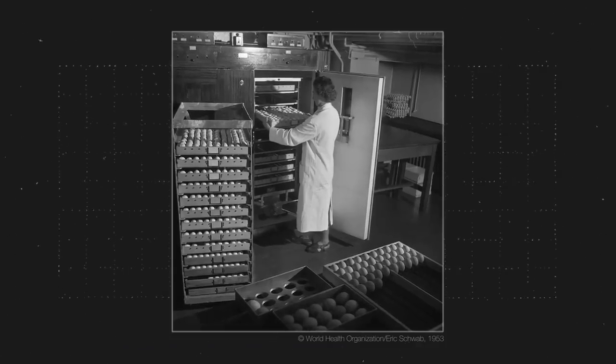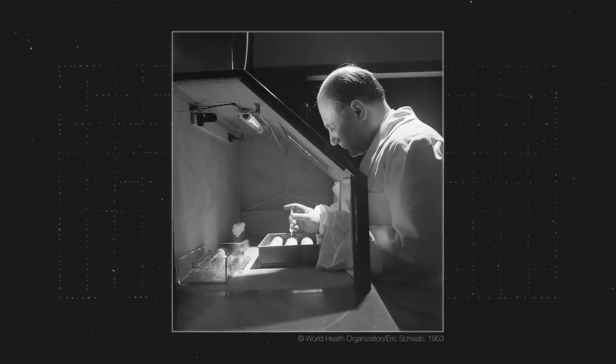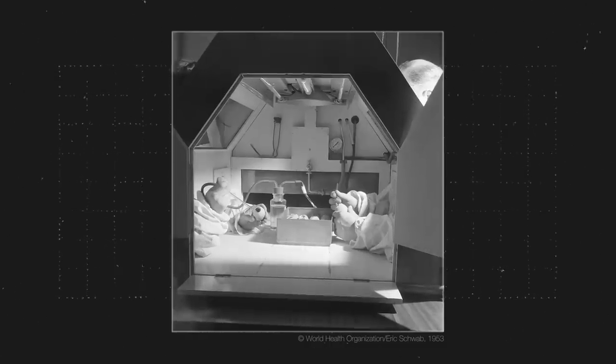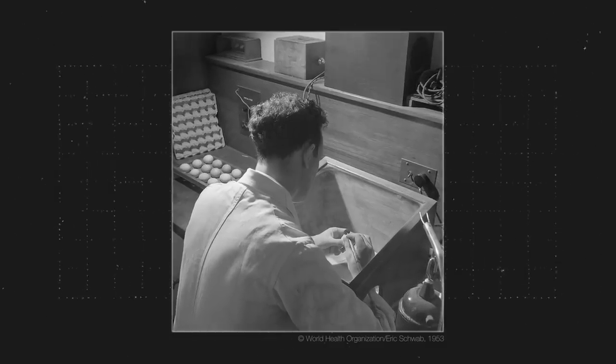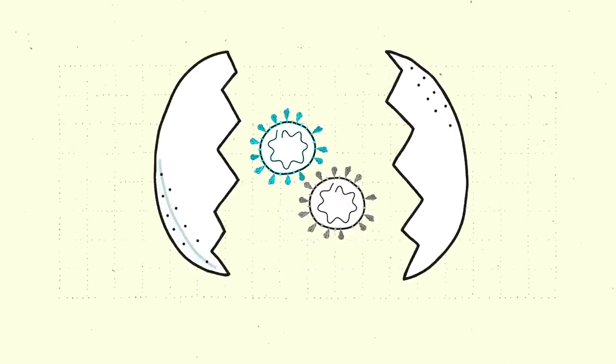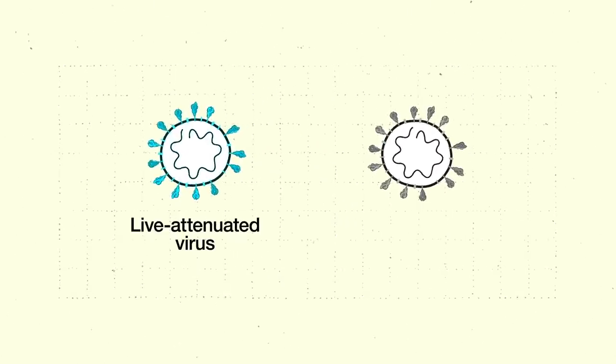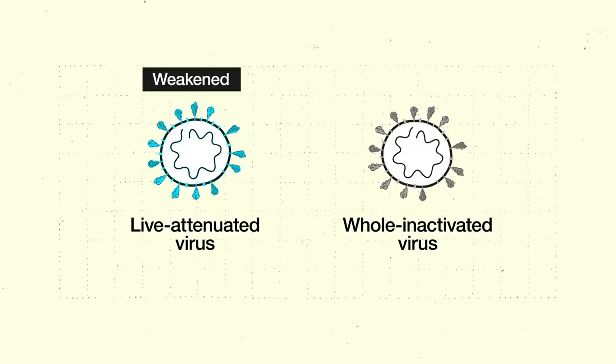In these pictures from 1953, the scientists are developing an influenza vaccine. They're injecting viruses into fertilized eggs, which are then incubated to allow the virus to replicate. Growing the virus is necessary for developing live attenuated virus and whole inactivated virus vaccines. These are the two classic approaches where the virus is either weakened or killed.